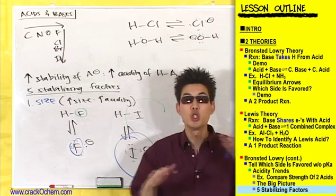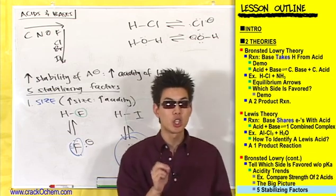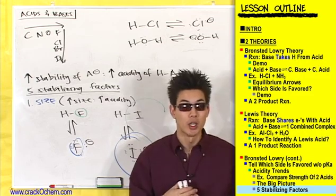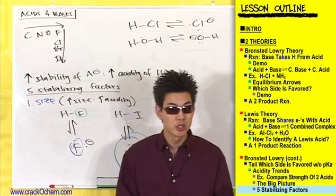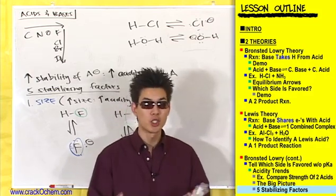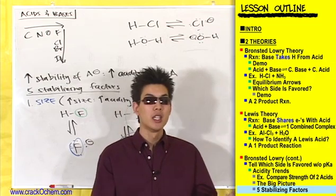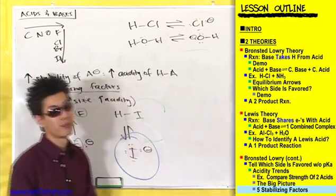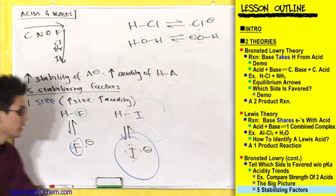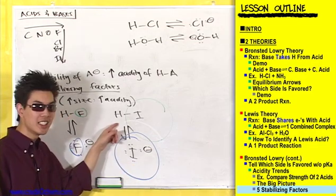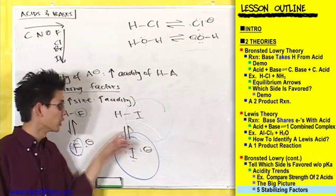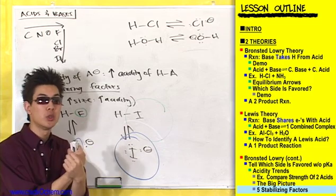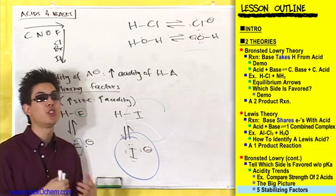If you can disperse your charge, that means you're neutralizing your charge. The more you can neutralize the charge, the more stable you are, making you the more stable conjugate base, and therefore the stronger acid. The smaller the atom, the more he wants to hold on to his hydrogen. The bigger the atom, the more willing he is to let go of his hydrogen. This iodine is big and strong — he doesn't need his hydrogen, so he's willing to let it go. That's why HI is a stronger acid than HF, because fluorine is small and holds on to its hydrogen tightly — making it a weaker acid.